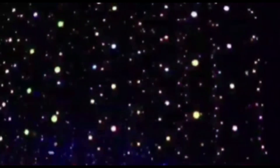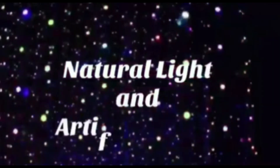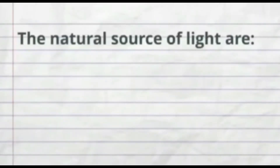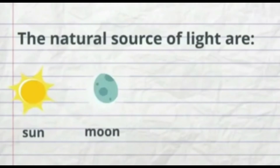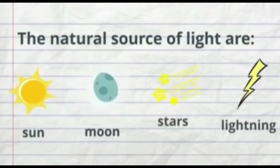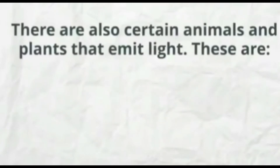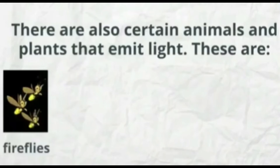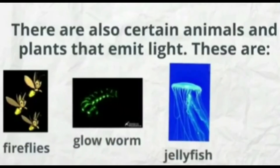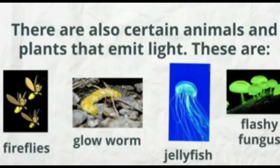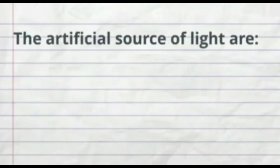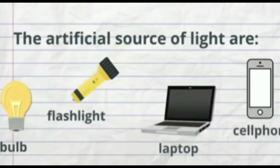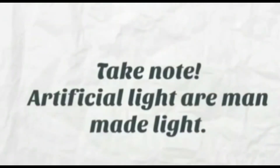Light comes from different sources. It can be classified into natural light and artificial light. The natural sources of light are the sun, moon, stars, and lightning. There are also certain animals and plants that emit light, such as fireflies, glowworm, jellyfish, and glowing fungus. The artificial sources of light include the bulb, flashlight, laptop, and cell phone. Take note: artificial light is man-made light.